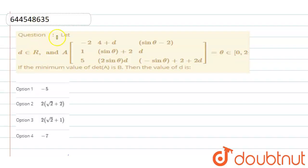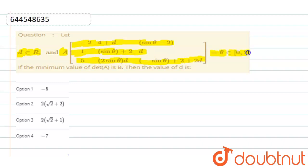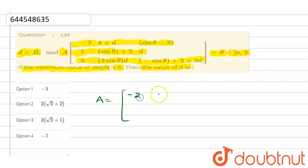The question is given that let D belongs to R and A is equal to a determinant matrix, where θ belongs to 0 to 2π. If the minimum value of |A| is 8, then find the value of D. So |A| is equal to the matrix with entries: minus 2, 4 plus D, sine θ minus 2.